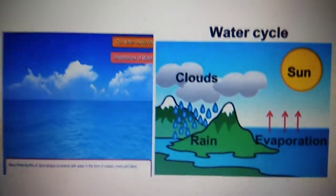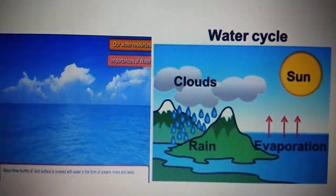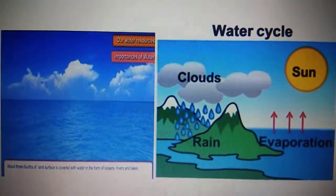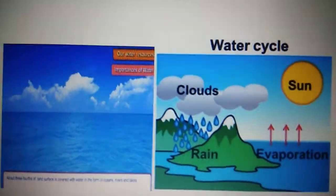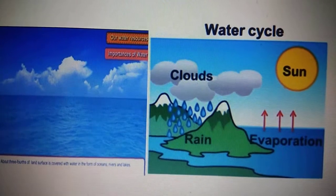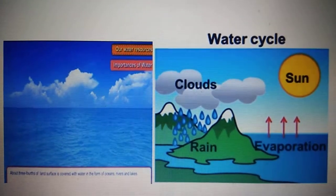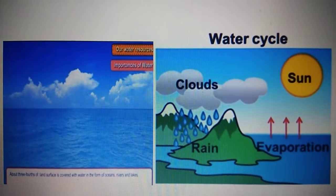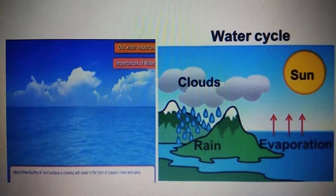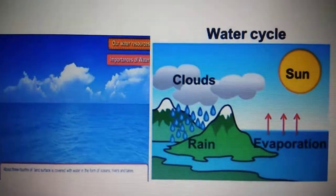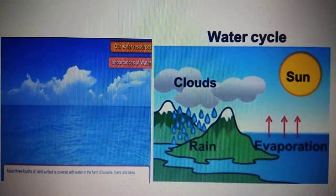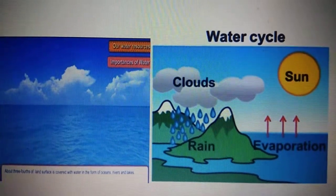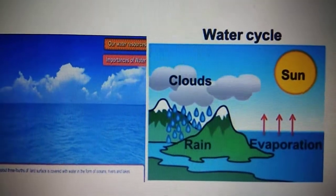Whatever water is evaporated, it condenses and precipitates as rain, coming back because of the gravitational pull of the earth. Whatever is evaporated condenses and precipitates again as rain. Water can neither be added nor subtracted from the earth — its volume remains constant. Its abundance only seems to vary because it is in constant motion, cycling through the ocean, the air, the land, and back again through evaporation, condensation, and precipitation. This is called the water cycle.